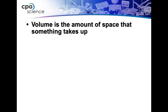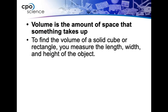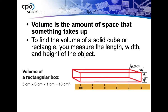Volume is the amount of space that something takes up or how much it contains. To find the volume of a solid cube or rectangle, we're going to use length times width times height — you get out a ruler. Remember, if we're multiplying a centimeter times a centimeter times a centimeter, the units are going to be in centimeters cubed — CM with a little 3 up top.